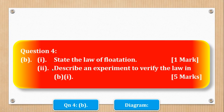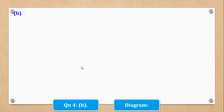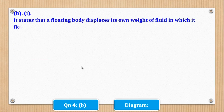Now let's go to Part B. Part B says: state the law of flotation — that is one mark. Then Part B Roman 2: describe an experiment to verify the law in B Roman 1. The law of flotation states that a floating body displaces its own weight of the fluid in which it floats.